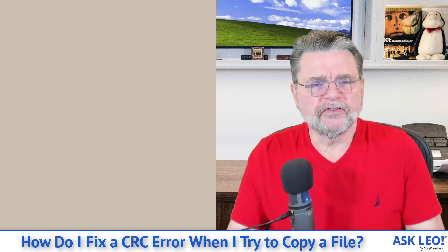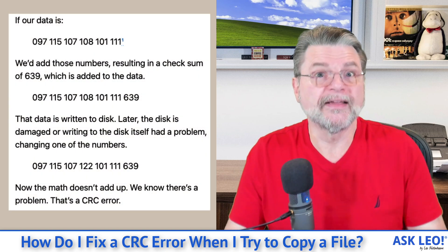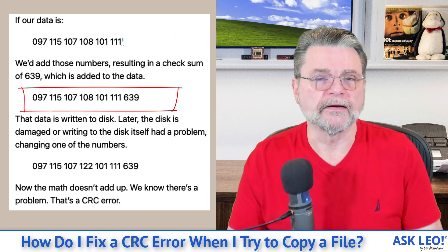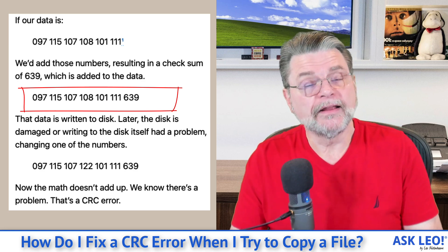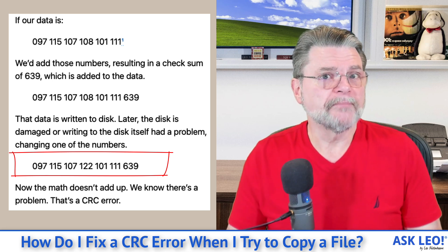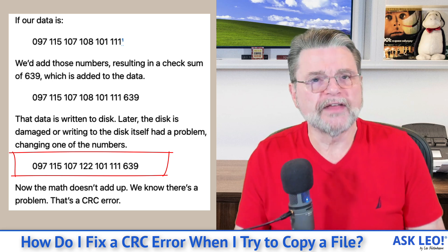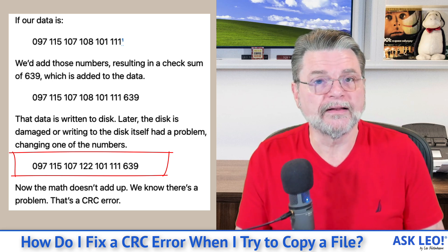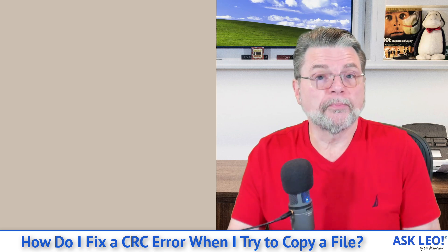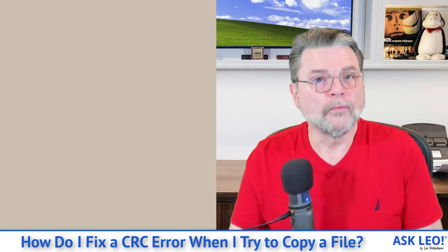A CRC error is essentially a fancy name for some fancy math that's used to verify the integrity of data that has been written to media like a hard disk. It's a formula that all the data gets piled into — a number gets calculated, and then that number is also included with the data on the media. When that data is read, that same formula is used to calculate that same number. If the number turns out to be different than what was accompanying the data, we know that something about the data has changed — probably because the system was having trouble writing to it or reading from it.